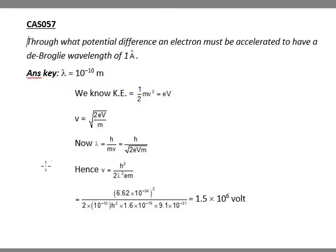Hello everyone, let's see our next example which is example number 57. Through what potential difference must an electron be accelerated to have a de-Broglie wavelength of 1 angstrom?